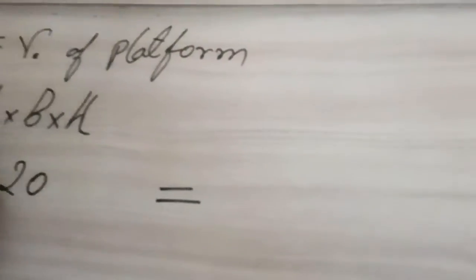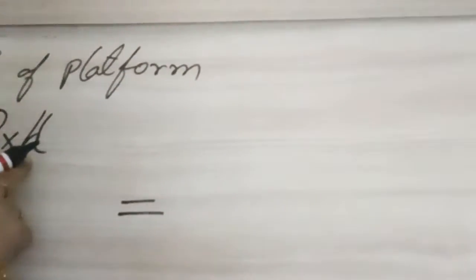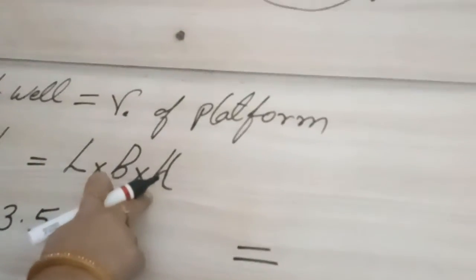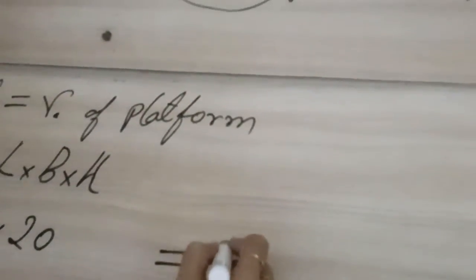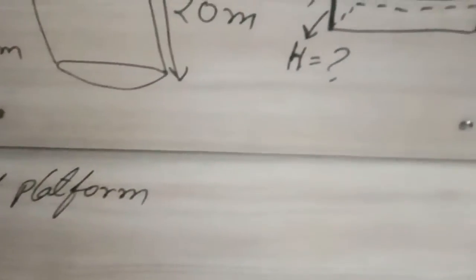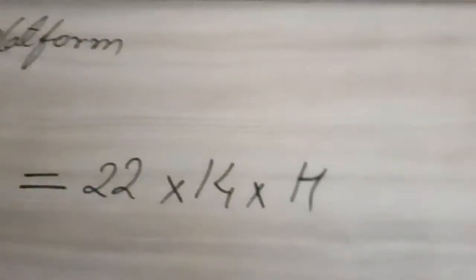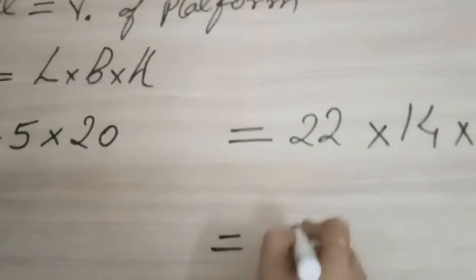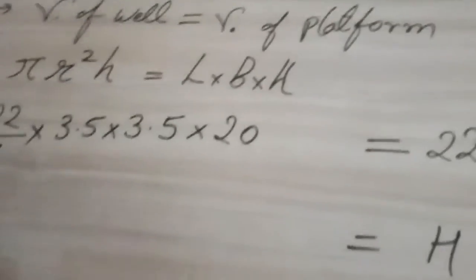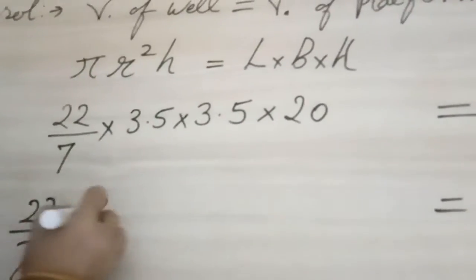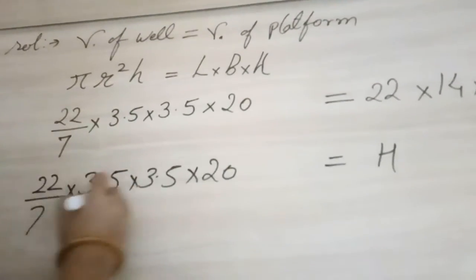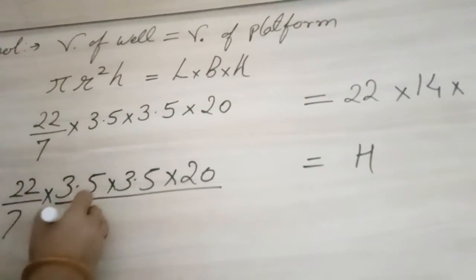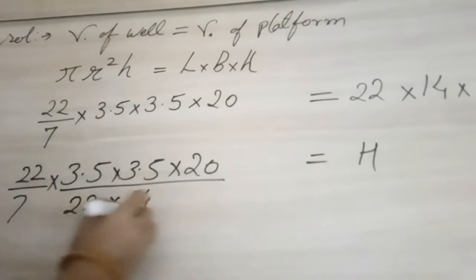Now here length into breadth into height. So we can transpose here both the sides. So first let us substitute the value then we will transpose. So length they have given 22 meter into 14 meter into height. And when we transpose what we will get: we will get height is equal to 22 by 7 into 3.5 into 3.5 into 20 upon 22 into 14.